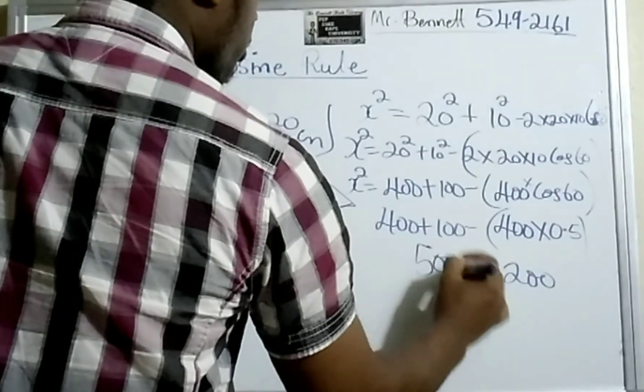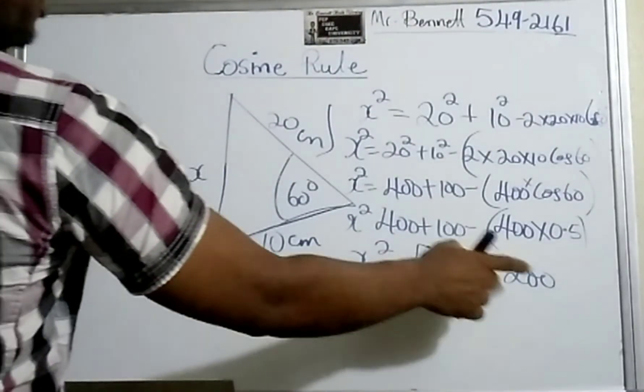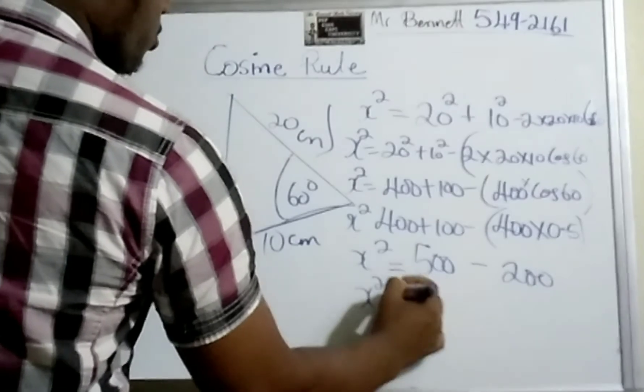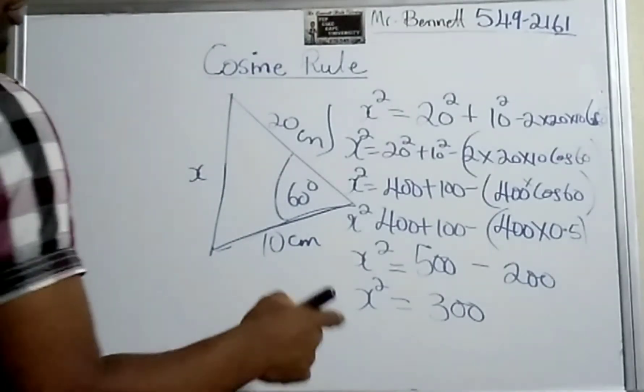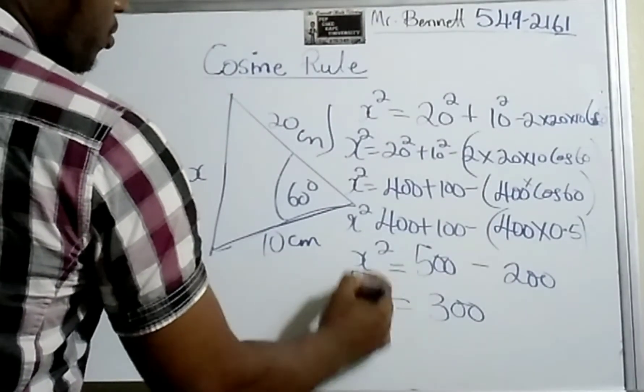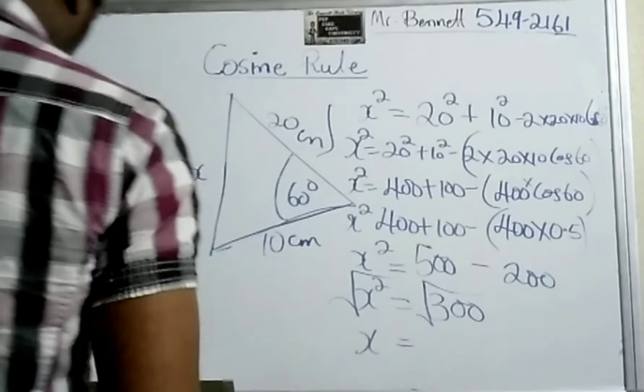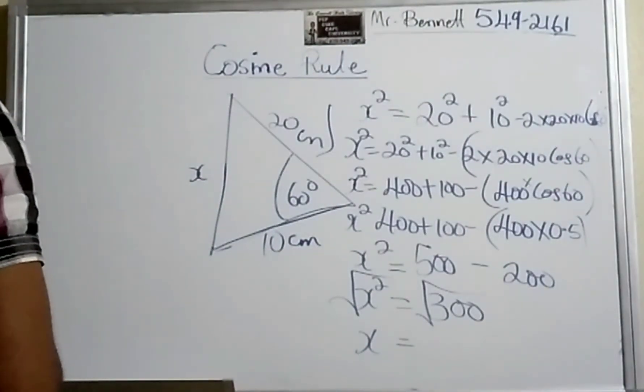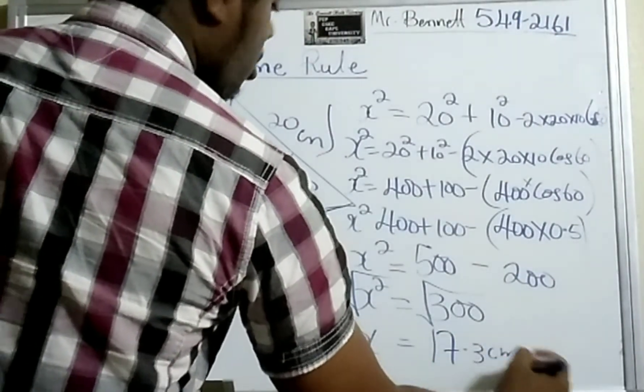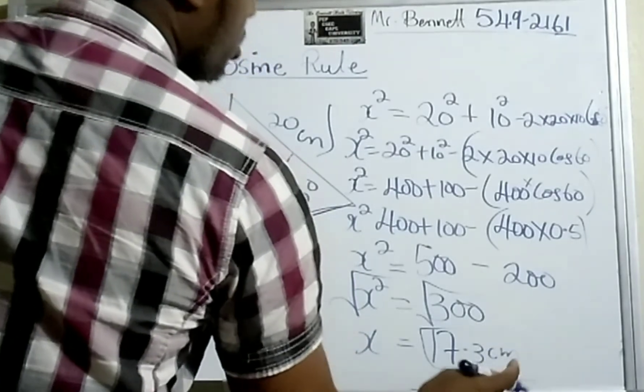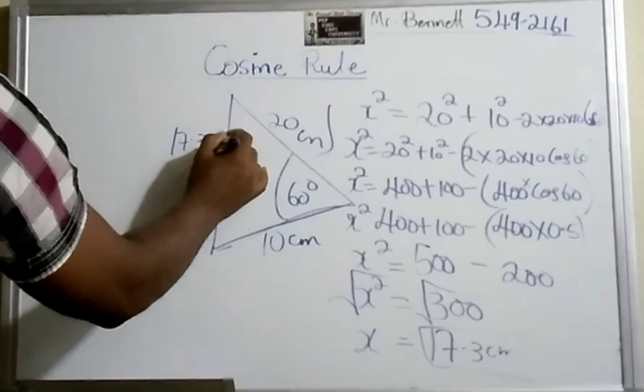Work out this part first. This gives us 200, and then we have 500. Therefore, x² equals 500 - 200, which gives us 300. But remember, in order to get rid of the square, we have to take the square root. The square root of 300 is 17.3 cm. It's length, so therefore this side equals 17.3 cm.